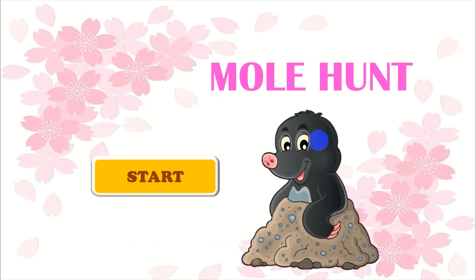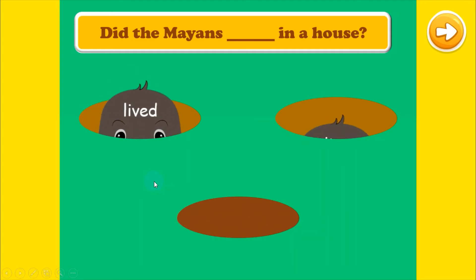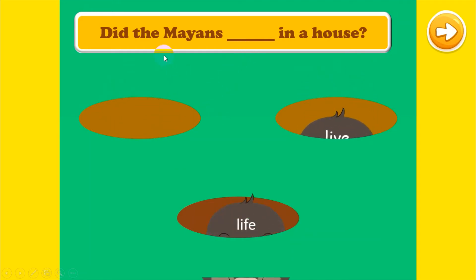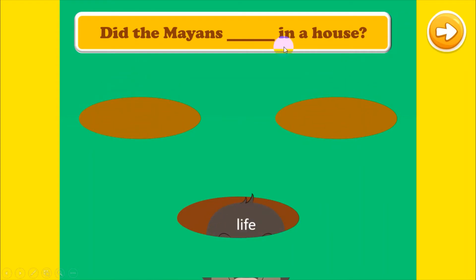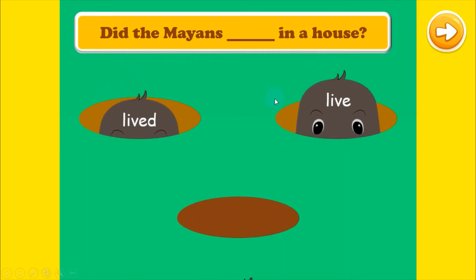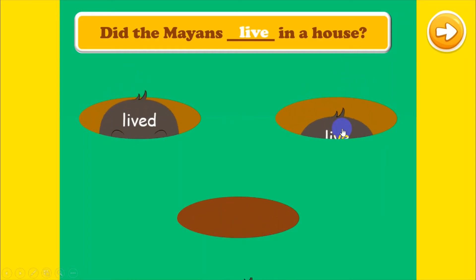Let's play a game. This game is called Word Hunt. Look at the sentences with the words missing, and your mission is to choose the correct word to complete the sentences. Are you ready? Let's go. Which one do you choose? Did the Mayans live in the house? Very good, that's right, you're correct!